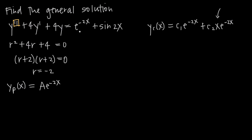Whenever you have an exponential, leave the exponent as-is and place a constant in front. For sine of 2x, when you have sine or cosine of some value, you need to include both sine and cosine terms with constant coefficients. Since we've already used a, we move to b and c: plus b·sin(2x) plus c·cos(2x). If you had cosine instead of sine, you'd still need both. Either way, with sine or cosine, you need both terms.